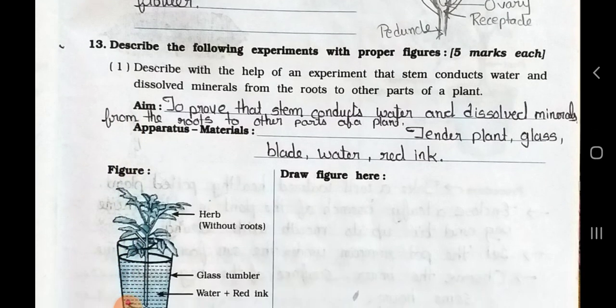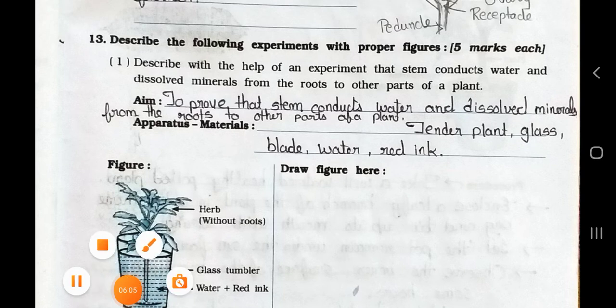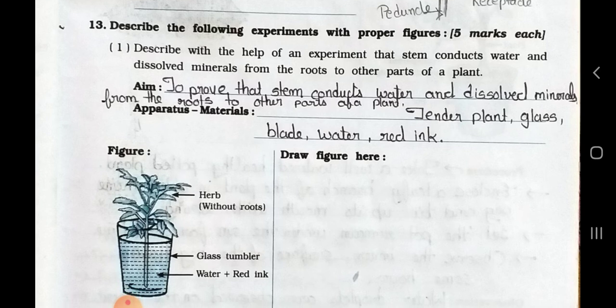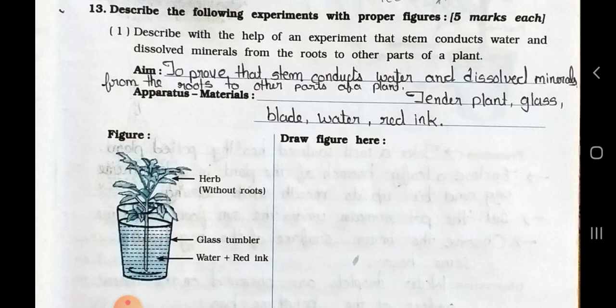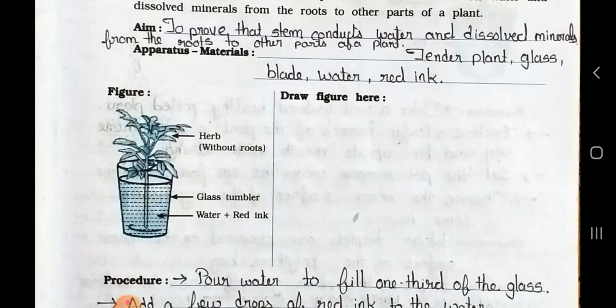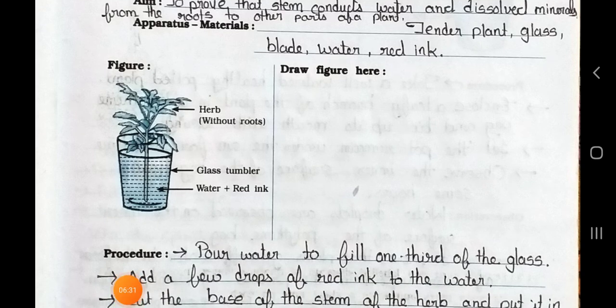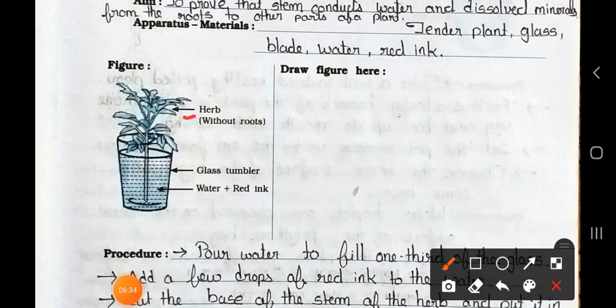Now see, the main 13. Describe the following experiments with proper figures, 5 marks each. Question number 1. Describe with the help of an experiment that stamen conducts water and dissolves minerals from the roots to other parts of a plant. Aim: to prove that stamen conducts water and dissolves minerals from the roots to other parts of a plant. Apparatus and materials are tender plant, glass, blade, water, red ink. Now see the figure. Here is the herb, means without seed. Glass. It is a glass. And here in the glass, water plus red ink.